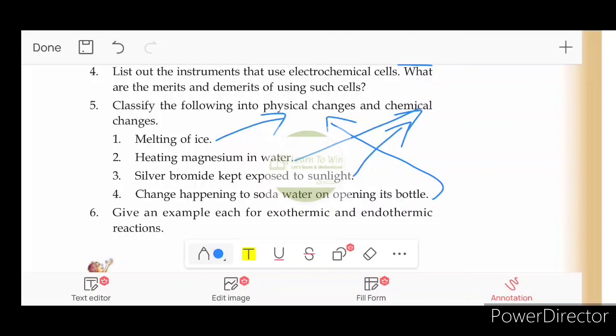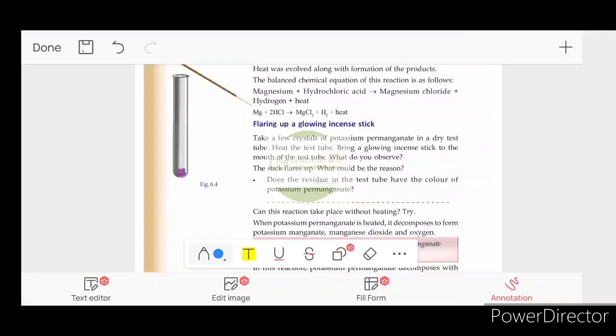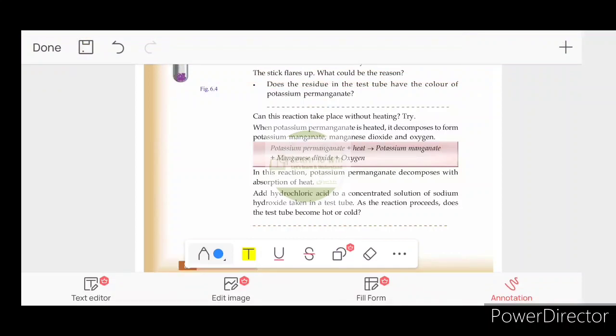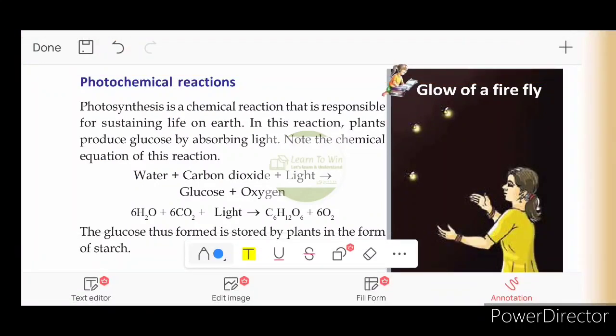Give an example each for exothermic reaction and endothermic reaction. Exothermic reaction is when the product side releases heat. We call it exothermic. Endothermic reaction is when the reactant side absorbs heat. We call it endothermic reaction. It's a chemical change. Let's take an example. Exothermic reaction: magnesium plus hydrochloric acid gives magnesium chloride plus hydrogen plus heat. This is an exothermic reaction.